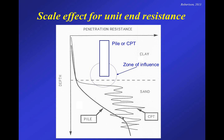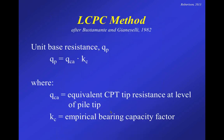So if you take the tip resistance of the cone near the top of the sand layer and try to predict the capacity of the pile at that same depth, you need to account for the fact that the pile is of a larger diameter and is still being influenced by the clay above. You have to account for this scale effect. Most methods do account for it, though they all tend to do it slightly differently. For LCPC, they have a specific way to account for that.